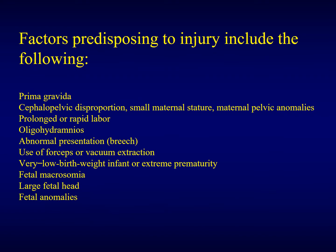What are the factors that predispose to a birth injury? First, if we have a mother that is primigravida, if she is short, if she has maternal pelvic anomalies or cephalopelvic disproportion, if the labor was prolonged or rapid, we have oligohydramnios and abnormal presentations. Sometimes the usage of forceps or instrumental delivery may expose the baby to a birth injury.